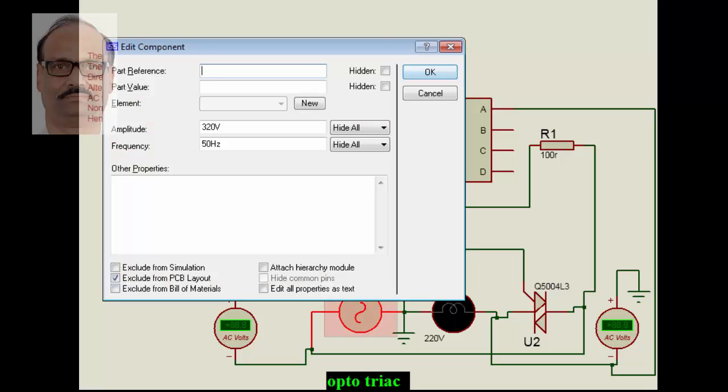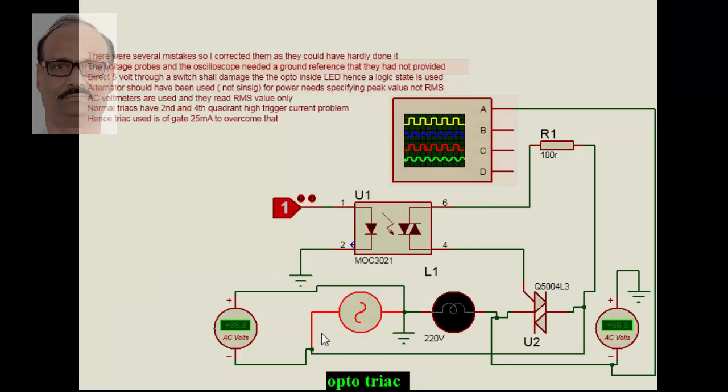If you look at the alternator, we have taken 320 volts. This is the peak voltage; the RMS value of power is 225 volts. So when we simulate this, we will be delivering an RMS value of over 225 volts. First of all, you have to take an alternator with peak value and not the RMS value.